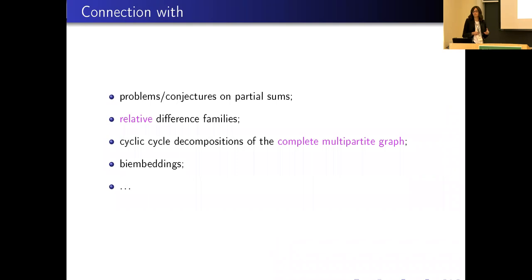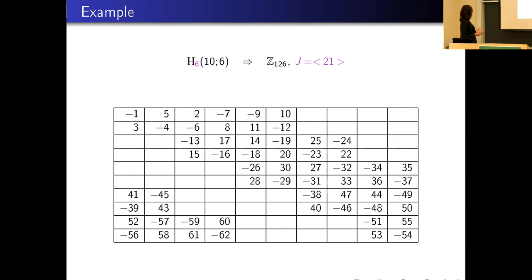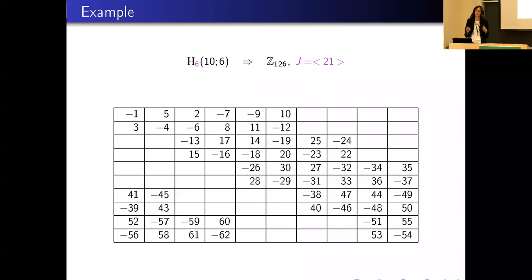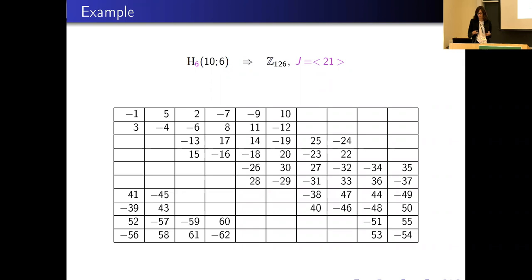So we get the decomposition not of the complete graph but more generally of the complete multipartite graph. Here for instance we have a relative Heffter array - square of order 10 - where each row and each column has six filled cells, with t equal to six. We work modulo 126 and must avoid the subgroup of order six. In this array, if you consider the elements as integers and take the absolute value, you find all integers from 1 to 63 except 21, 42, and 63, since those elements belong to the subgroup we must avoid.